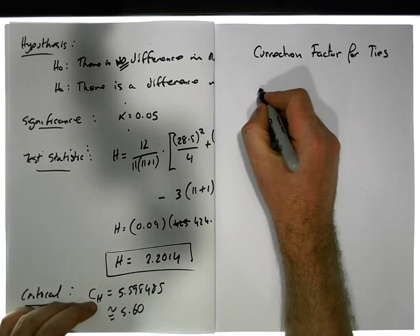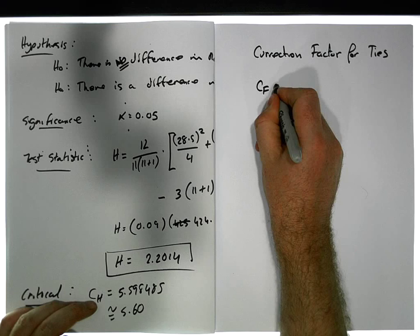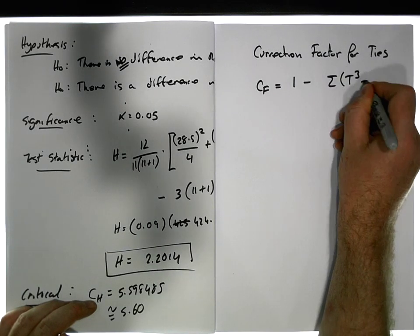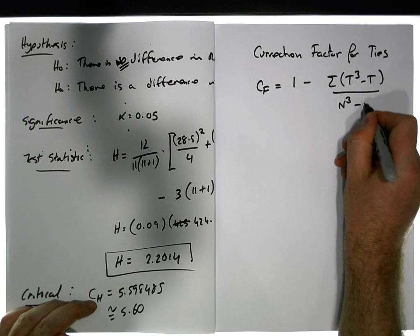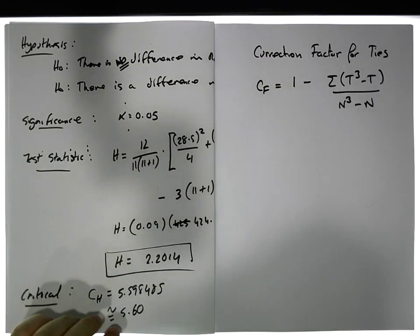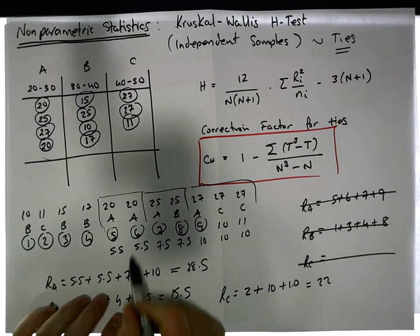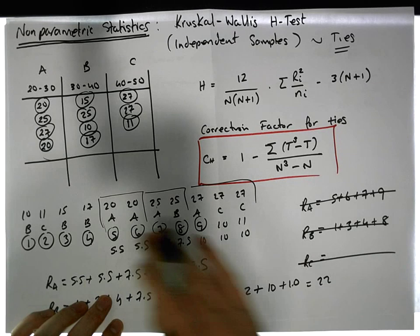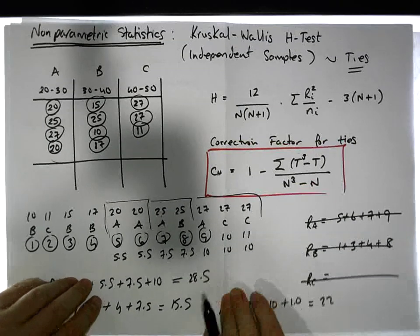Our correction factor for ties is equal to one minus the sum of t³ minus t all over n³ minus n. We already know n³, so the question is how many groups have ties. We've got one group here, another group here, another group, so there's three groups with ties.